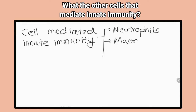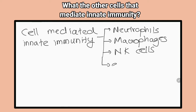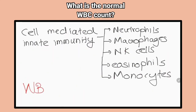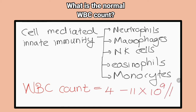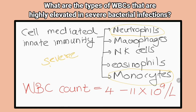What are the other cells that mediate innate immunity? Neutrophils, macrophages, natural killer cells, monocytes. What is the normal white cell count of a healthy adult? 4,500 to 11,000 white cells per microlitre. What are the types of white blood cells that are highly elevated in severe bacterial infections? Neutrophils and monocytes.